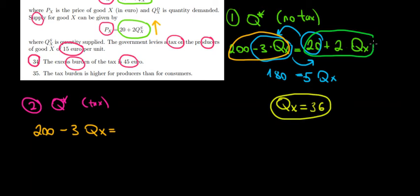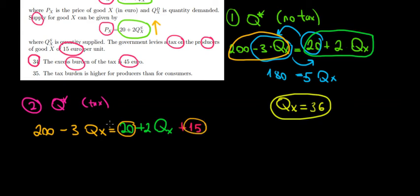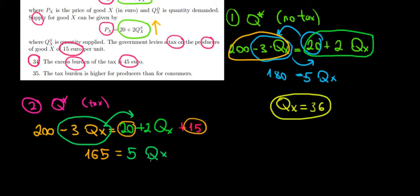That gives us 20 plus 2Q_X plus the additional 15 euros of tax, so plus 15. Now solving the math: 200 on one side, and 20 plus 15 equals 35 on the other. 200 minus 35 equals 165. Moving the Q terms: 2Q_X plus 3Q_X equals 5Q_X. Dividing both sides by 5, the equilibrium quantity after the tax equals 33 units.